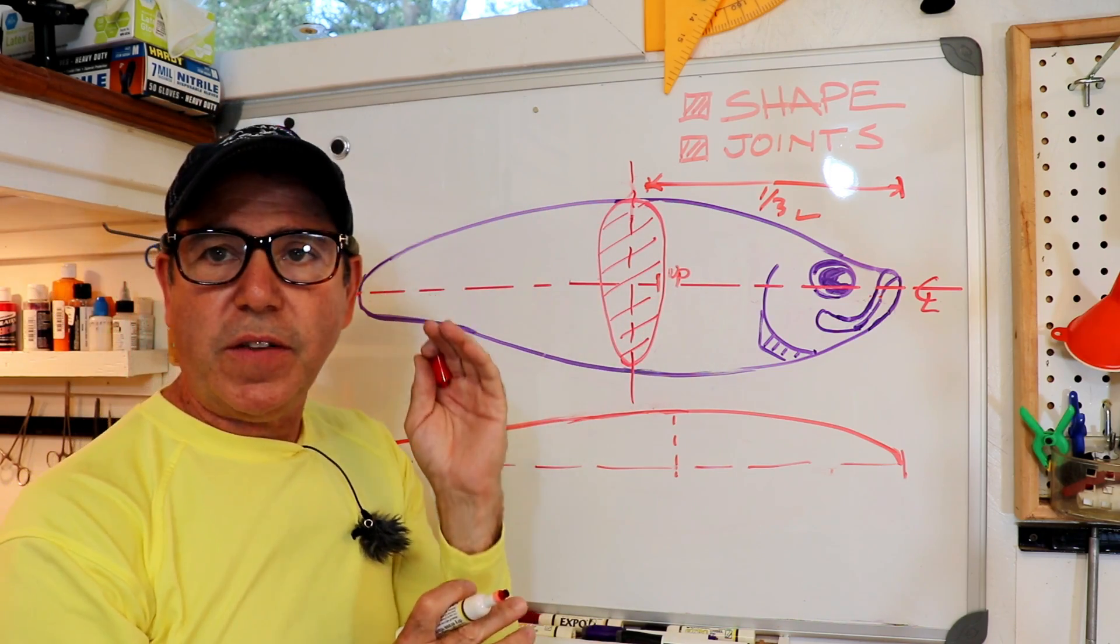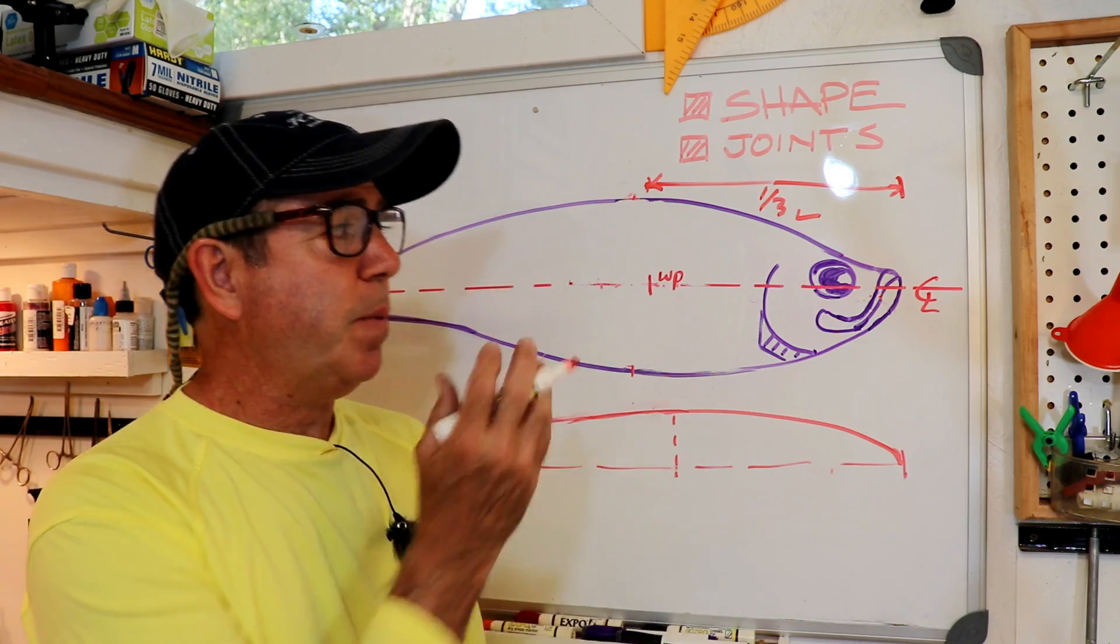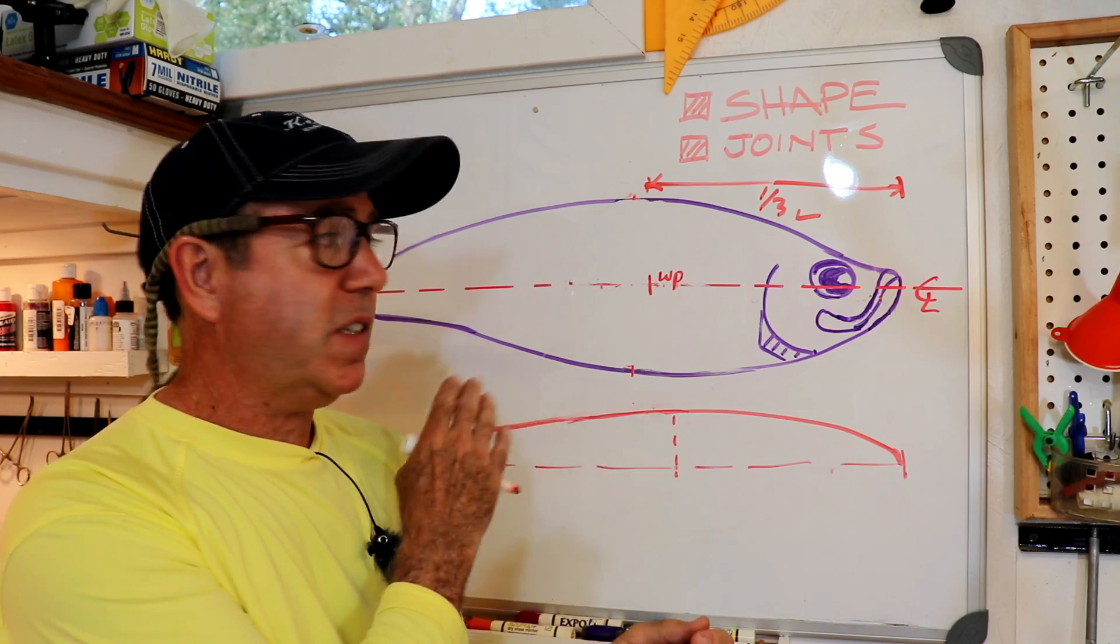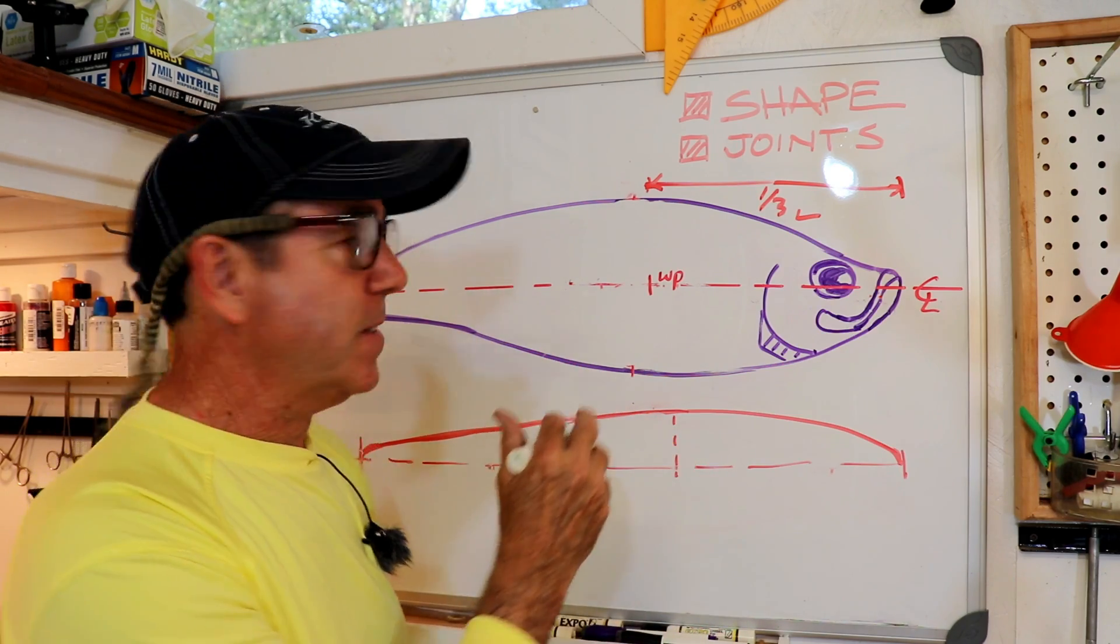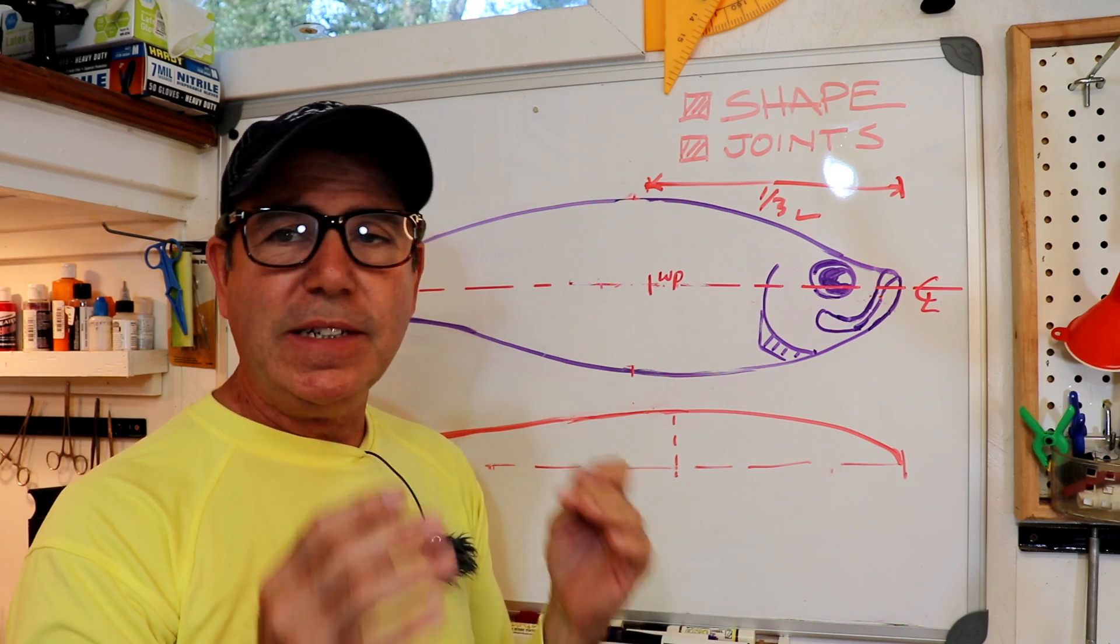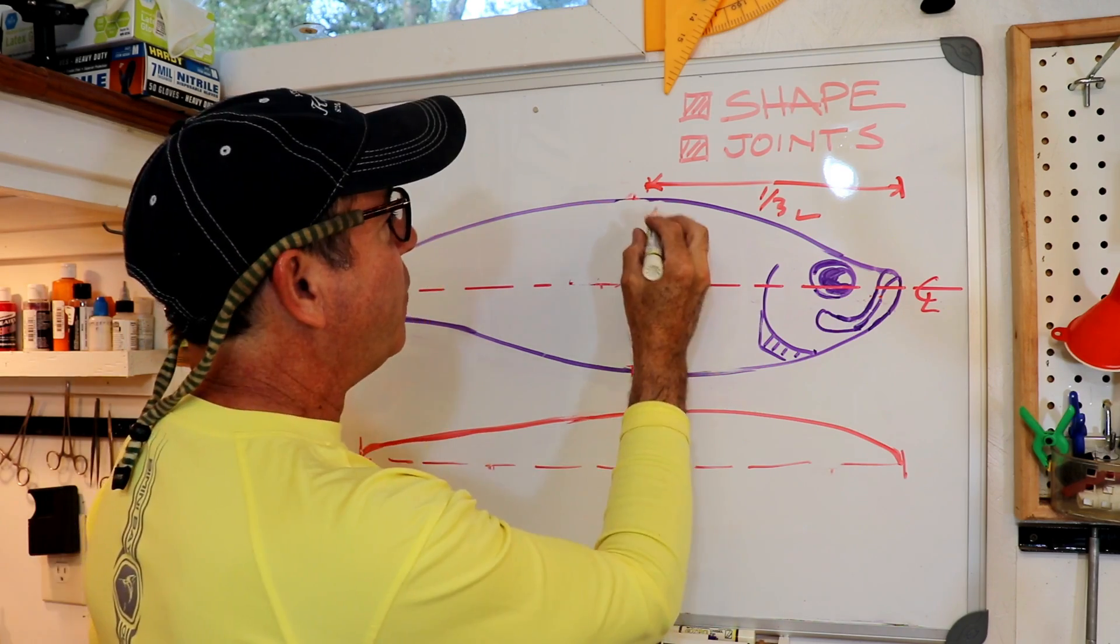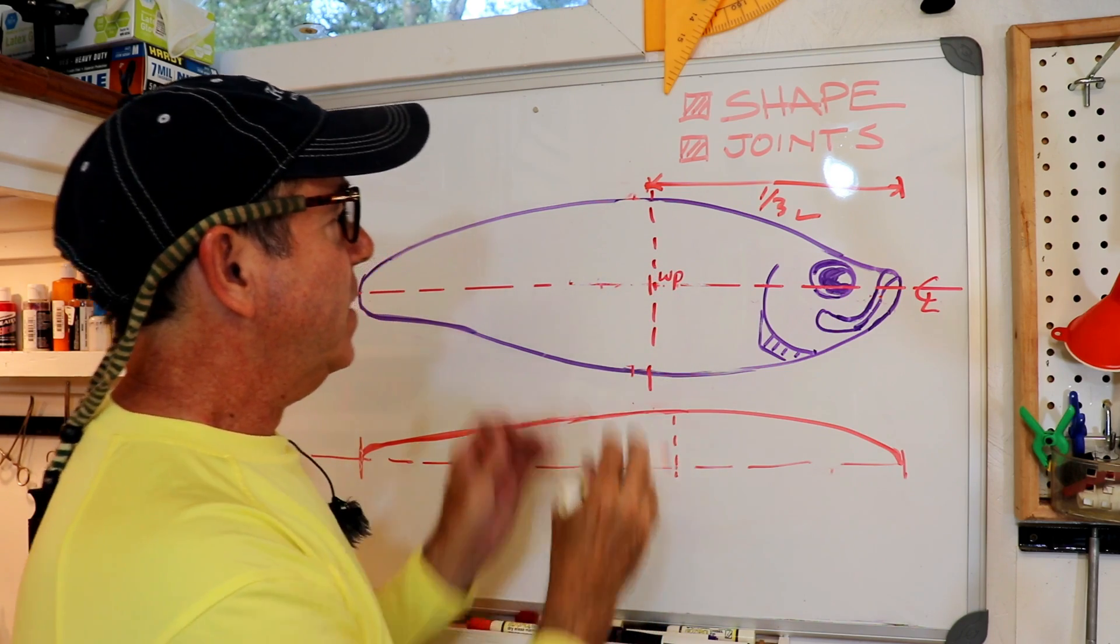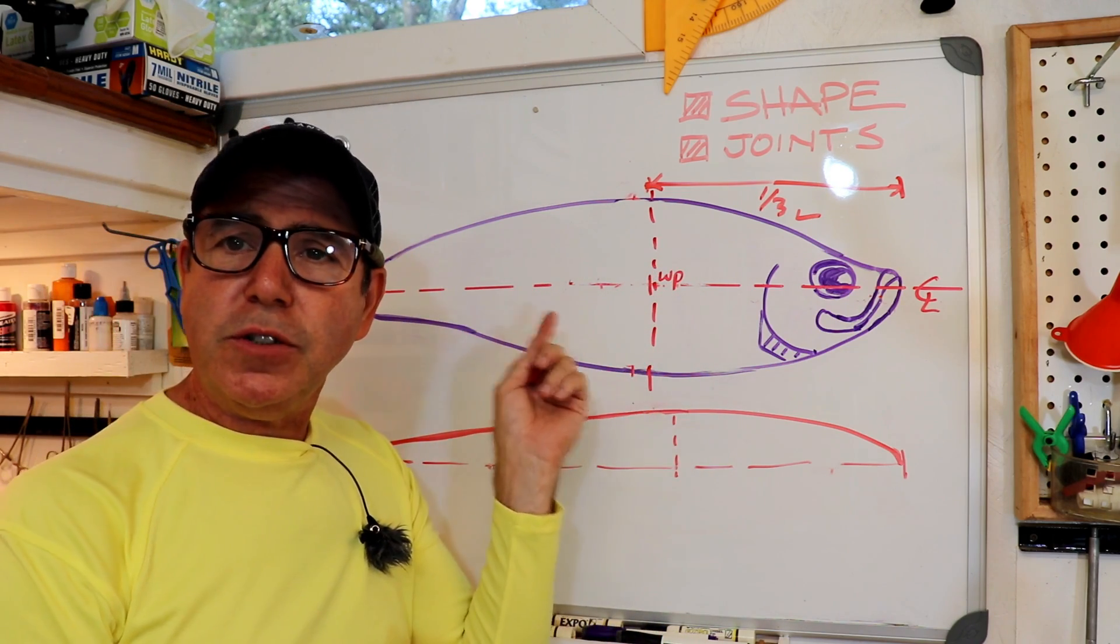You do need to remember that the symmetry will continue to be important right down the middle of this, so this side and this side are the same. Now let's place our joints. Remember we decided on doing four segments, so that's three joints. I like to use the rule of thirds, it just tends to work well. My first cut will be at the one-third line, that's my first joint.